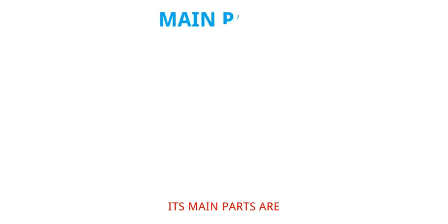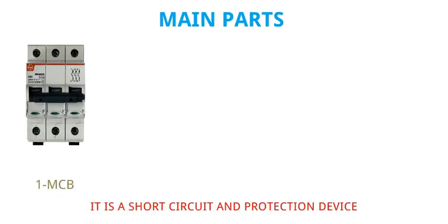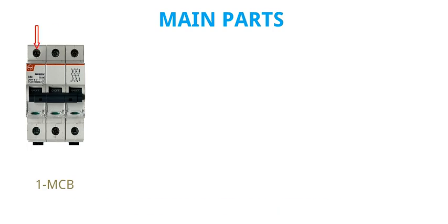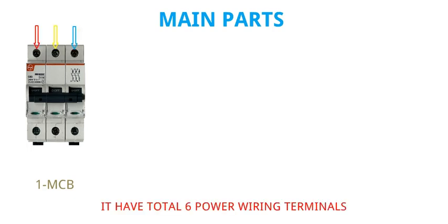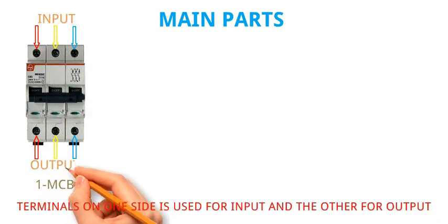Its main parts are: number one, MCB. It is a short circuit protection device. It has a total of six power wiring terminals — terminals on one side are used for input and the other for output.